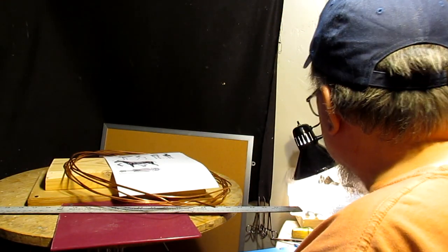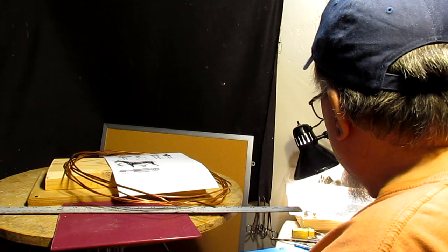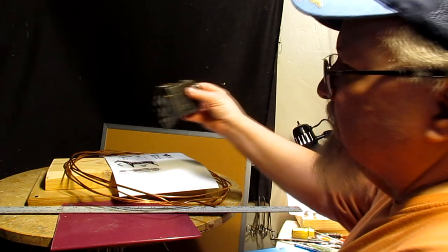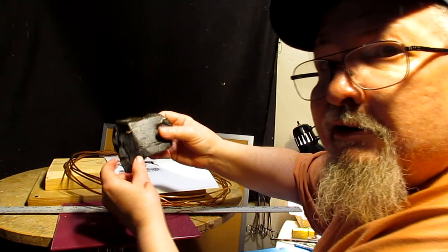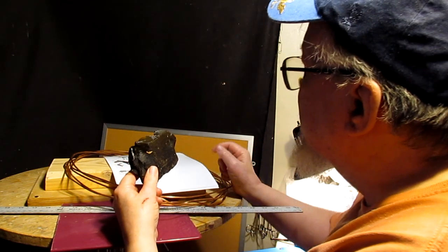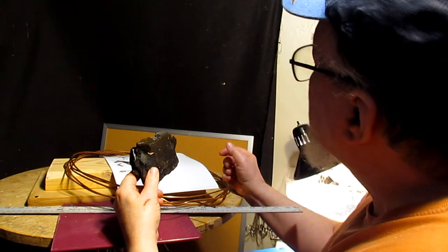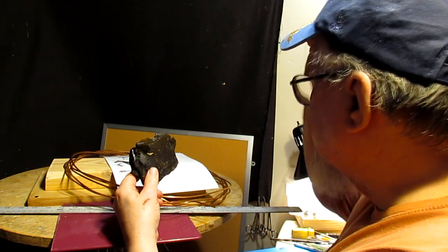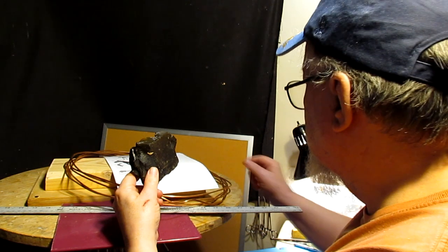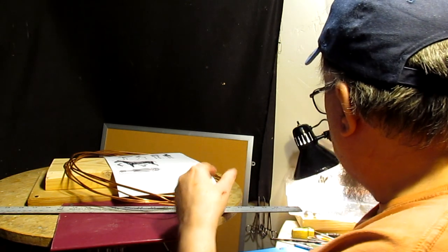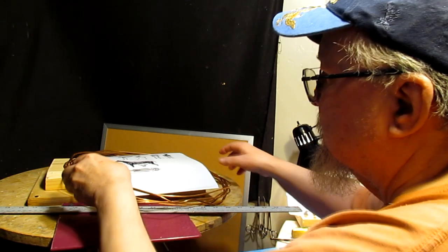And I'm going to be sculpting in Victory Brown wax, which is dark. It's going to be hard to see it, so I've got to figure out what I'm going to do to make it easier for you to see. But anyway, I'm going to get started on the armature at least.